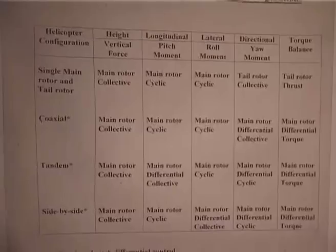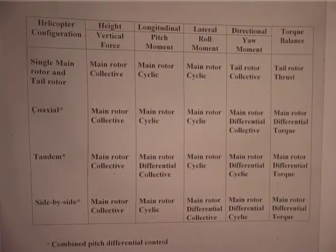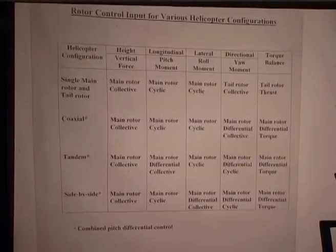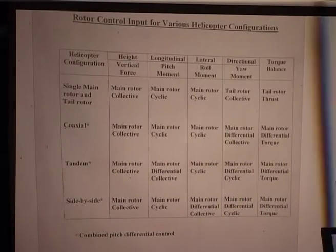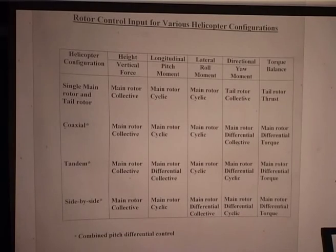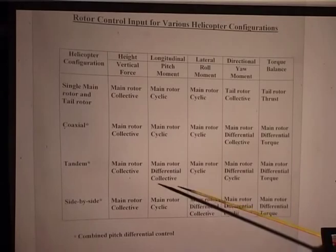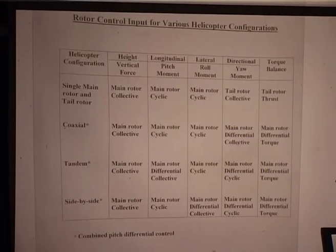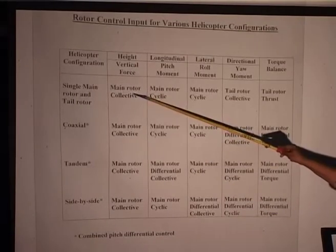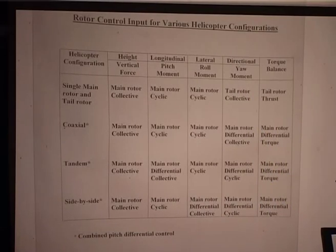I will give you a table providing details of helicopter control for different configurations. You can have a single main rotor and one tail rotor, coaxial, tandem, and side by side. The controls differ slightly depending on what configuration of the helicopter we are addressing. For height — vertical movement up and down — all are controlled by the main rotor collective.